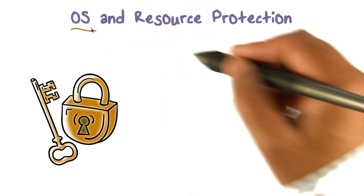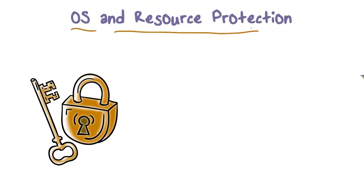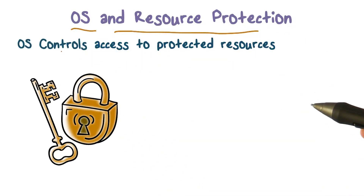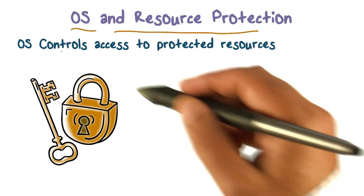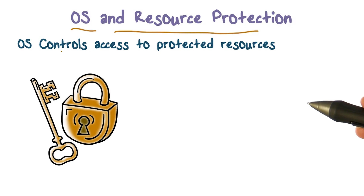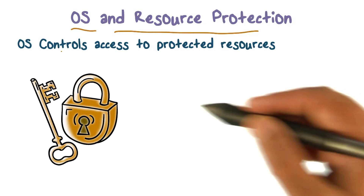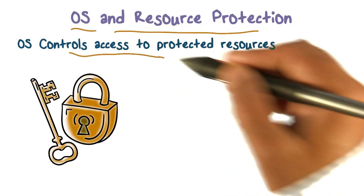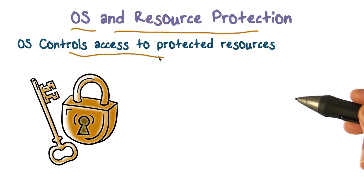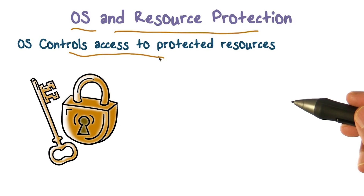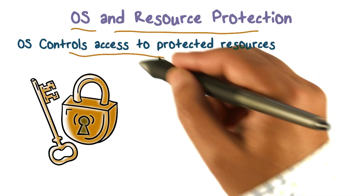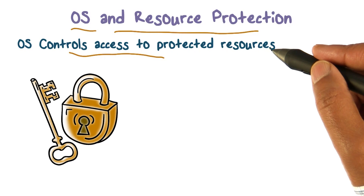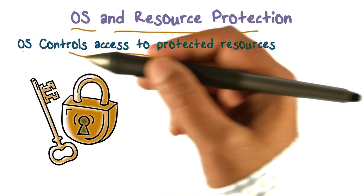One of the things the operating system does is protect resources that need to be protected. How does that work? The way it works is because we give control of the resources to the operating system. Untrusted applications cannot directly access resources — the operating system has control and is going to control access to these resources. We know it can do that because of the complete mediation requirement: anybody who wants access to such a resource actually has to come through the operating system.